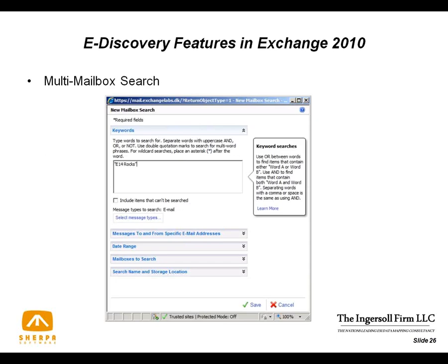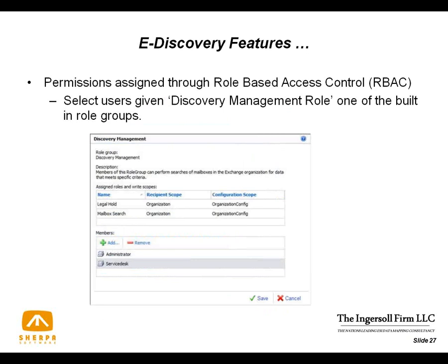Let's talk about the eDiscovery features in Exchange 2010. The biggest feature is a user interface built around the multi-mailbox search. Previous versions required PowerShell with very crude interfaces. Now there's a nice interface making it easy to set up keywords and very transparent to the person doing the searching. The multi-mailbox search and discovery mailbox are only available to people assigned that role within the role-based access control system. Search results and reports are put into the discovery mailbox, and permissions are through the discovery management role.